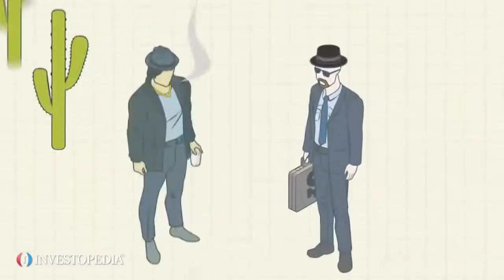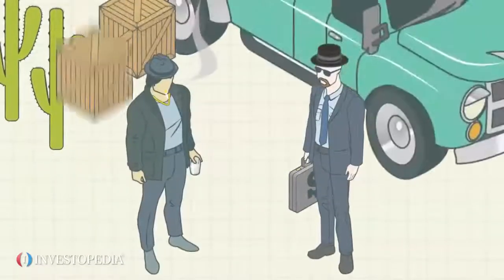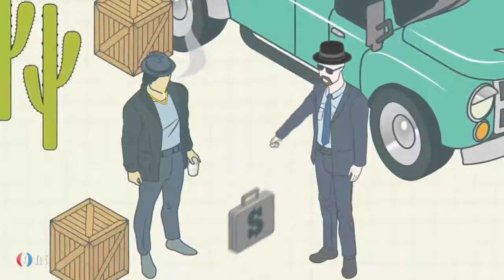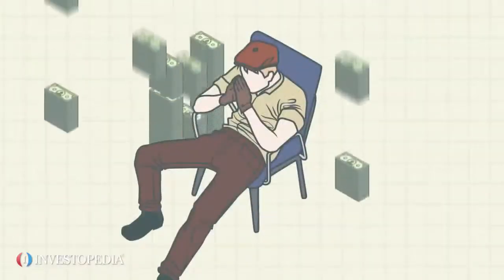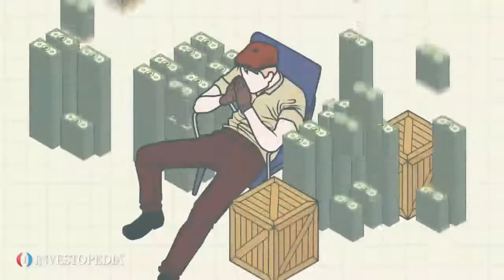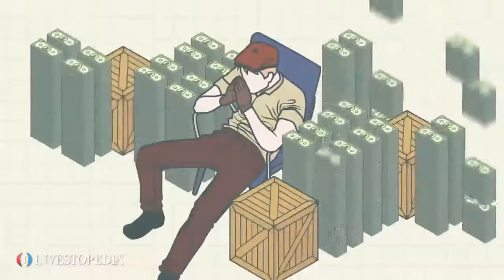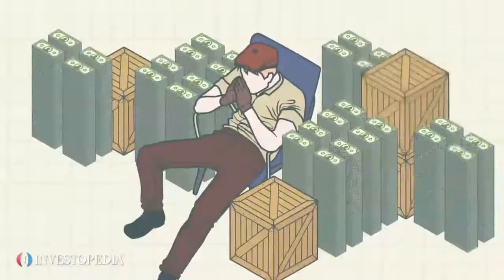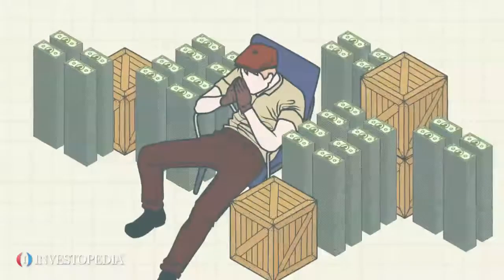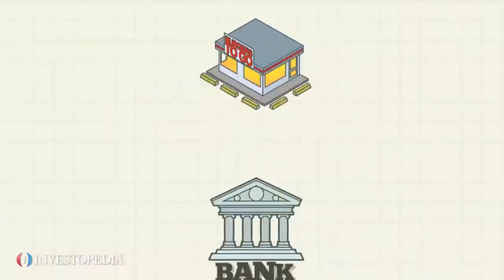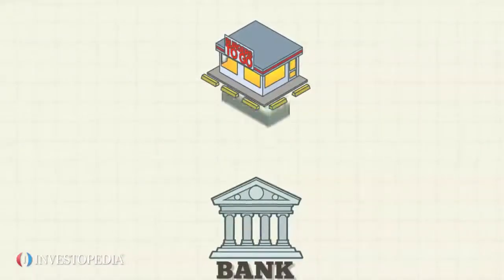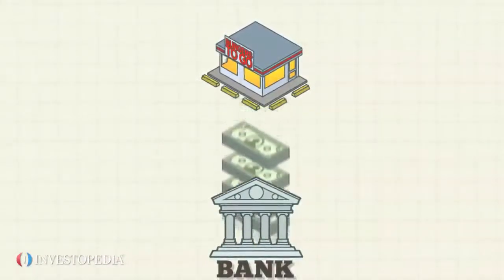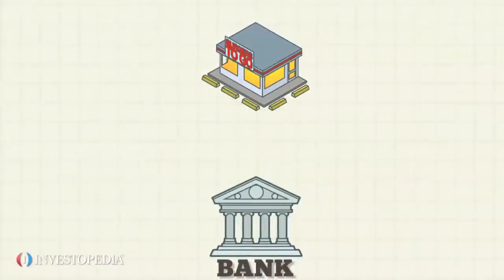Illegally earned money needs laundering in order for the criminal organization to use it effectively. Dealing in large amounts of illegal cash is inefficient and dangerous. The criminals need a way to deposit the money in financial institutions, yet they can only do so if the money appears to come from legitimate sources.